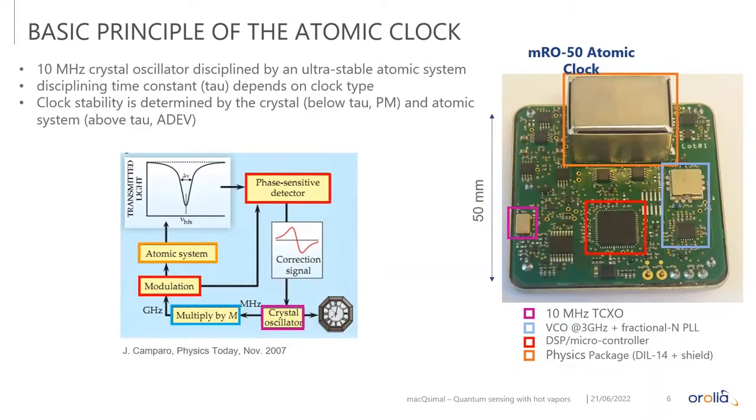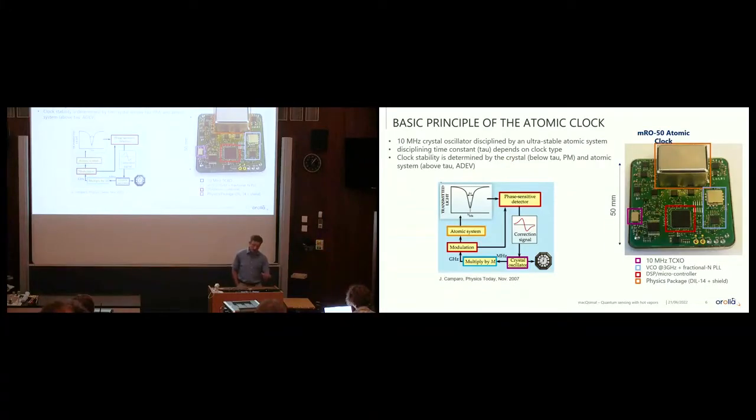In the blue diagram on the lower side, we have the servo loop. Let's take a tour in the servo loop and see how the atomic clock works. The crystal oscillator gives the output to the client. The crystal oscillator is phase-locked to a gigahertz oscillator. The gigahertz oscillator VCO is injected into the physics package, which is inside this orange box on the MRO. That physics package generates an error signal, a correction signal that is used to discipline the crystal oscillator, giving an ultra-stable 10 megahertz signal for the client.